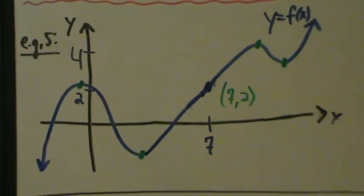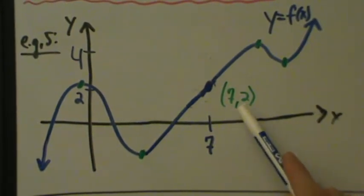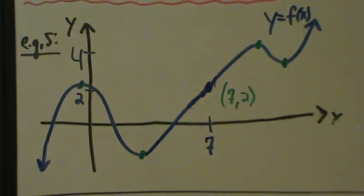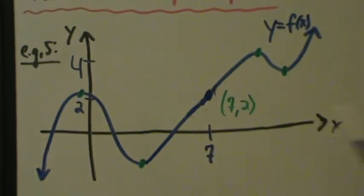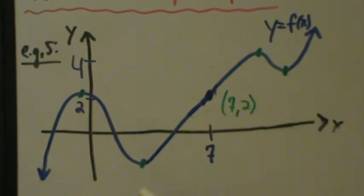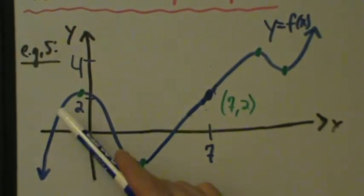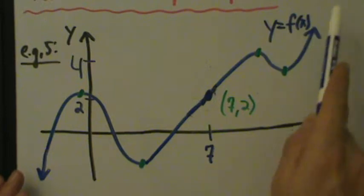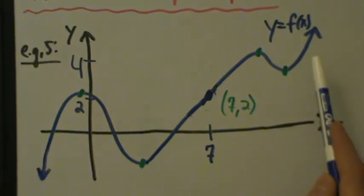What about this point (7, 2)? There's nothing special about it — that's not a local min, it's not a local max, it's not a global min or max. And actually this function has no global extrema, because here the function keeps decreasing off this way, so there's no absolute minimum, and the function keeps increasing over this way, so there's no absolute max.